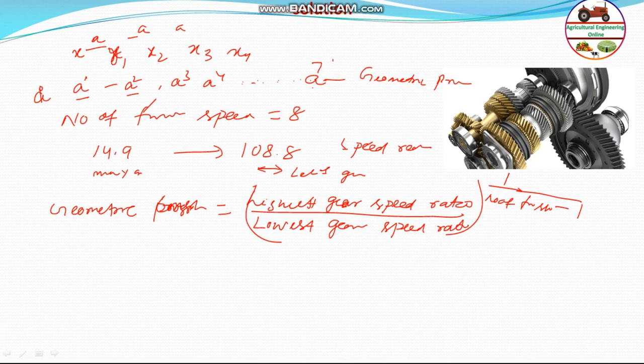So a to the power 7 is the highest. So here actually if you see it is taken 14.9 by 14.9, and this one will equal to 108, sorry, 14.9 divided by 108.8. So that will be equal to a to the power 7. So in this case, you have to find out a. It is 1 by 7.